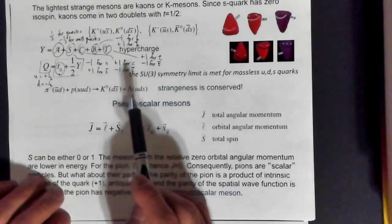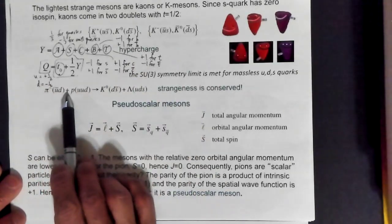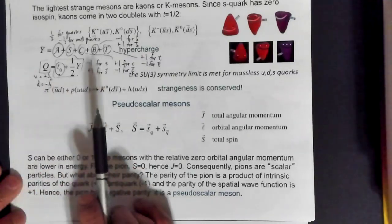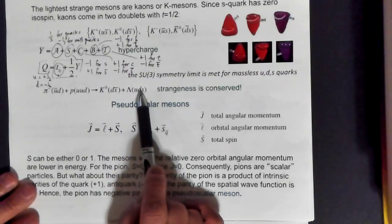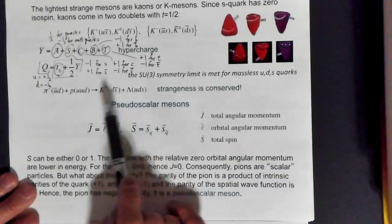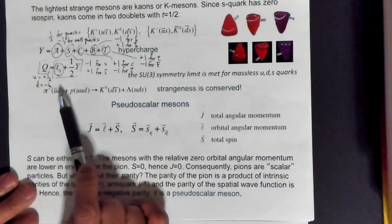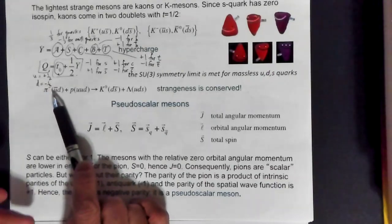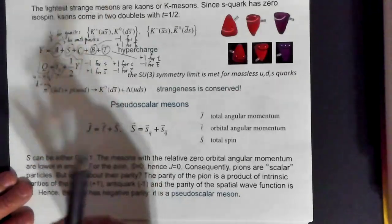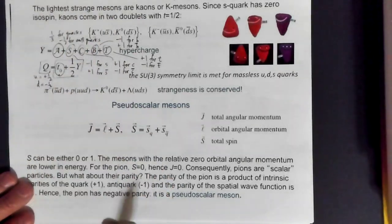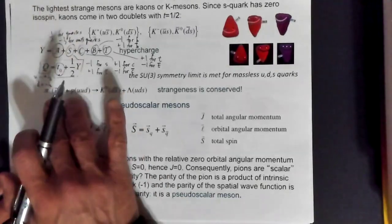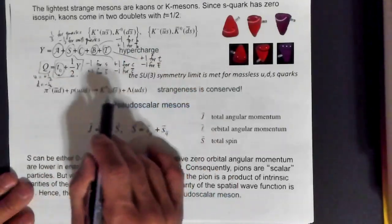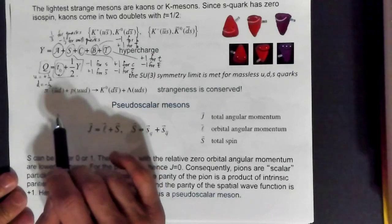We can look at various reactions, for example π- (which is Ubar-D) plus a proton (which is U-U-D in the simplest quark decomposition) going to K0 (which is Sbar-D) plus lambda (which is U-D-S). These are called hyperons. What's going on here is conservation of quark flavor: if you count the number of up quarks minus the number of anti-up quarks, it should be the same on both sides — and similarly for down quarks and strangeness.